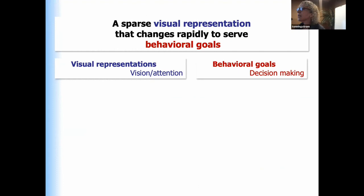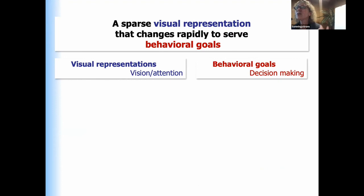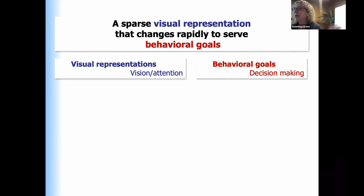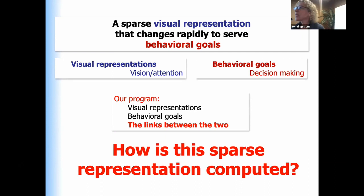The problem is we want to understand how the brain gives rise to a sparse visual representation that changes rapidly to serve the immediate behavioral goal. These concepts are studied in siloed fashion in our field, especially among empiricists. A lot of labs study vision and visual representation with no reference to behavioral goals. The other half studies decision-making — all about reward and costs but with no reference to information; it's contentless. What we've been thinking about is how these two are connected, because this is really what attention is all about: connecting content with goals.